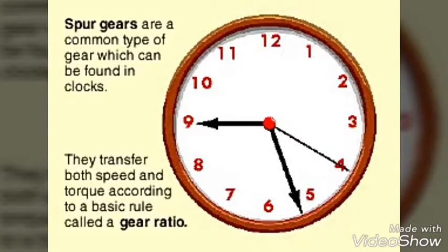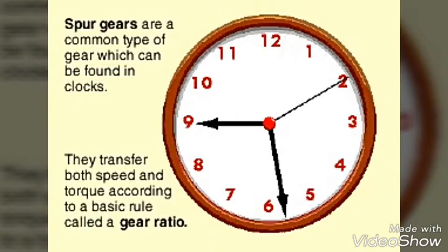Spur gears are a common type of gear and can be found in clocks. Their purpose is to transfer both speed and torque according to a basic rule called a gear ratio.